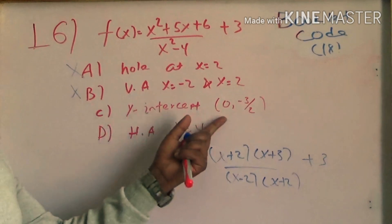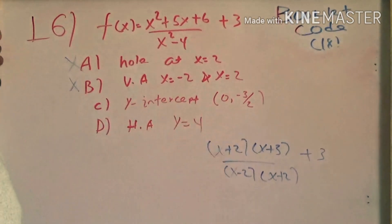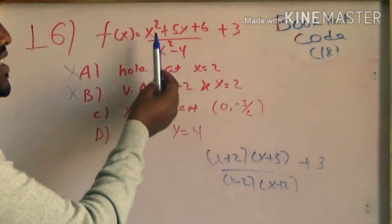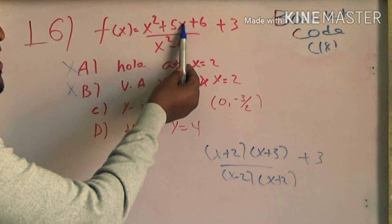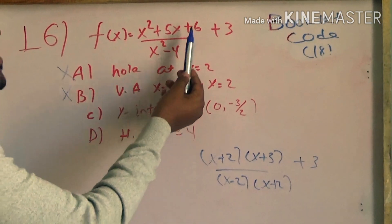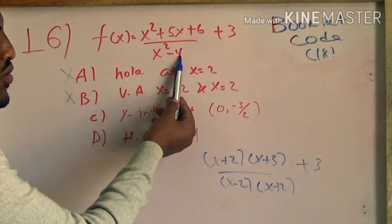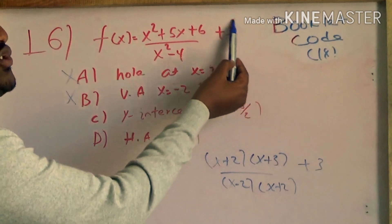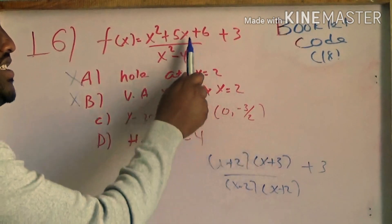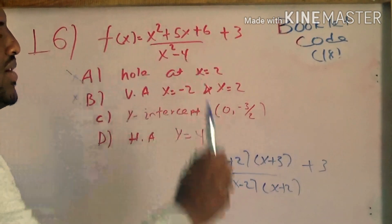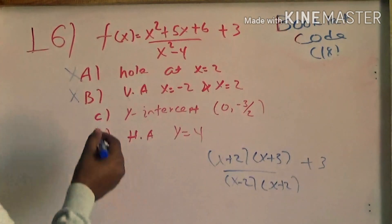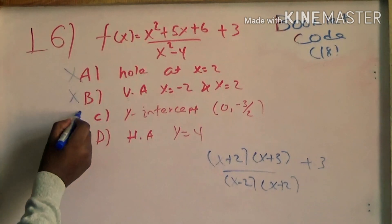To evaluate: 0 minus 3 over 2 will be 0. This is 0, this is 6. It gives minus 4 and minus 3 over 2. This is not valid; the number is minus 3 plus 3, and this is minus 3 plus 3. Choice C is false.